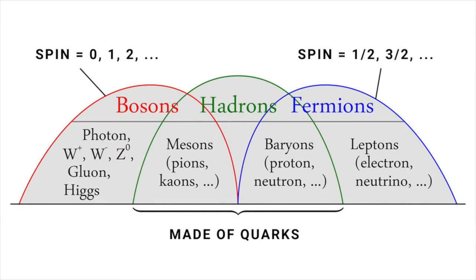Scientists currently recognize two main types of particles in the universe: bosons and fermions. The property that distinguishes between them is spin.